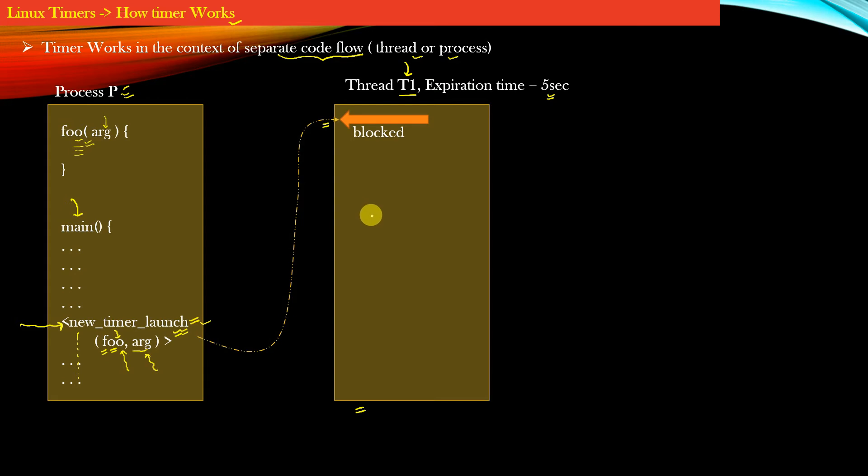The operating system will keep this thread in the blocked state, whereas your process P can execute whatever it wants after the API new timer launch has returned. This is how thread forking works. Your parent process continues its execution flow.